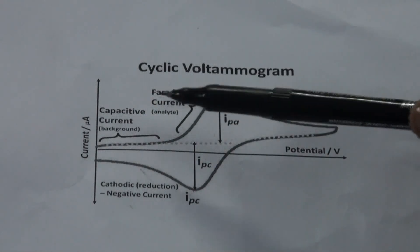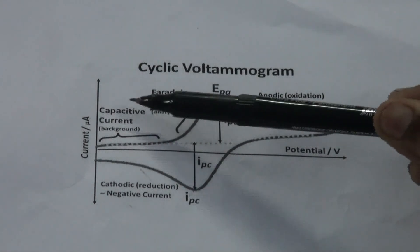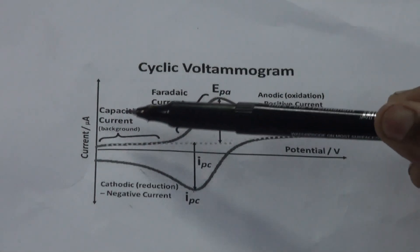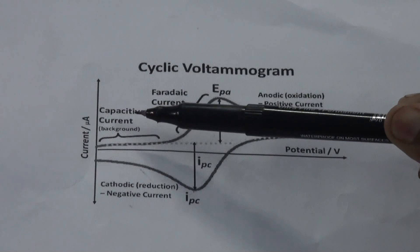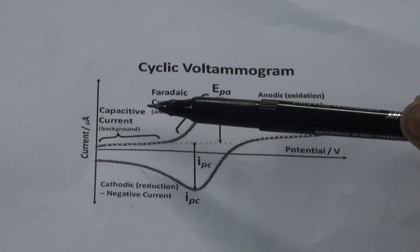In cyclic voltammetry, the initial current obtained is capacitive current. The capacitive current is obtained by the double charge layer being formed at the surface of the electrode.